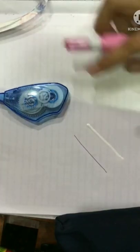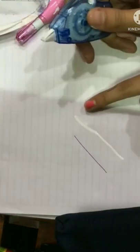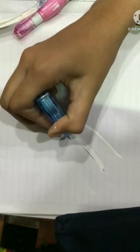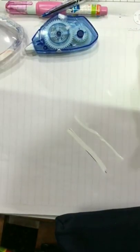Here, the whitener is wet and the correction tape is instant dry. The whitener is still wet while the correction tape is already dry. You can see the difference.